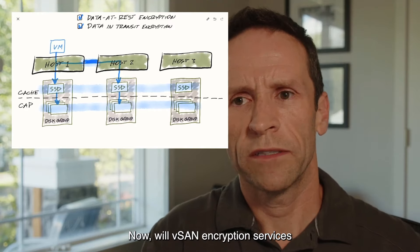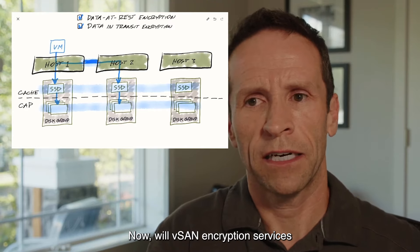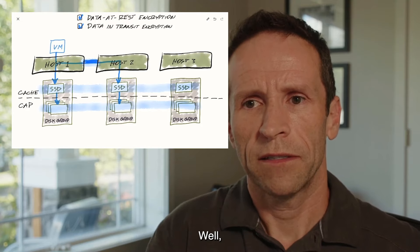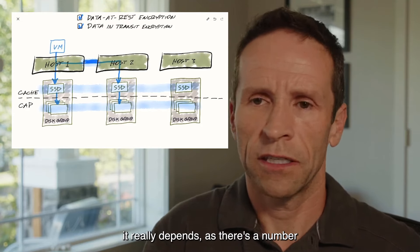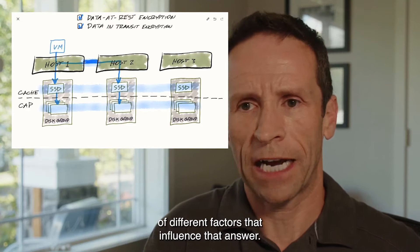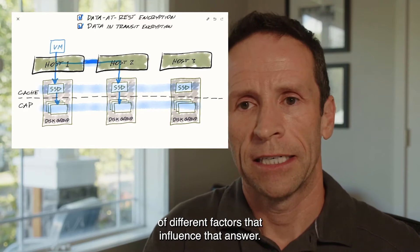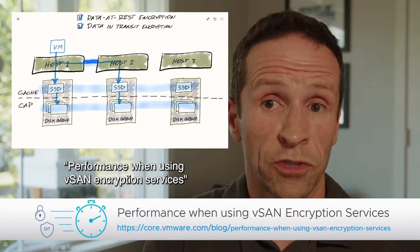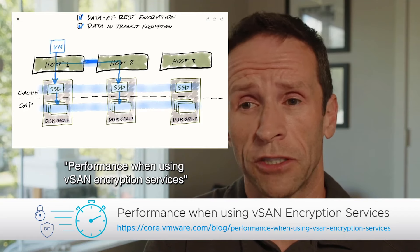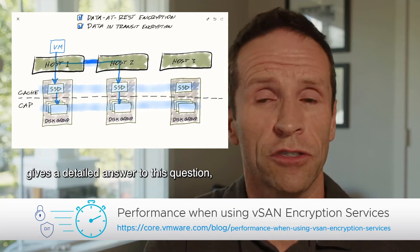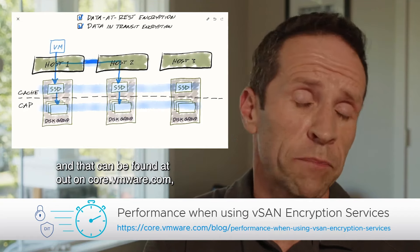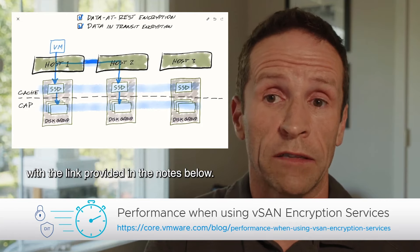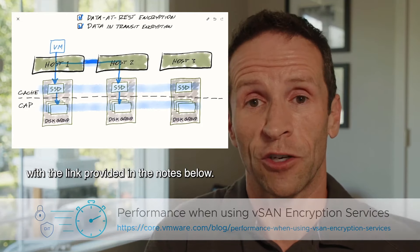Now, will vSAN encryption services impact performance in any way? It really depends, as there are a number of different factors that influence that answer. A blog post called 'Performance when using vSAN encryption services' gives a detailed answer to this question, and can be found at core.vmware.com with the link provided in the notes below.